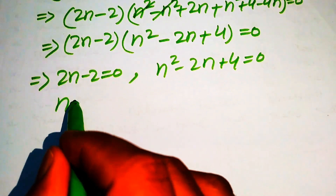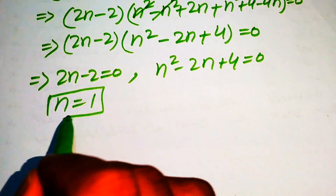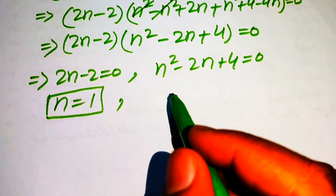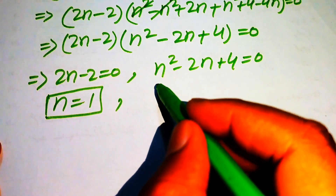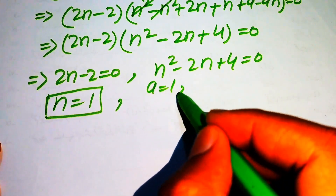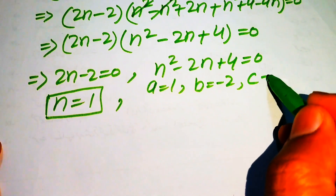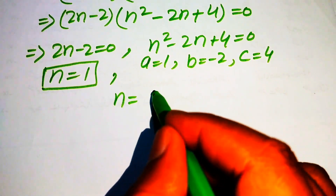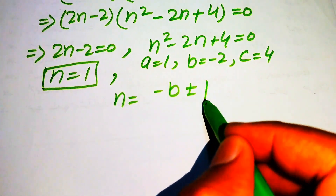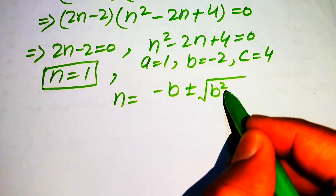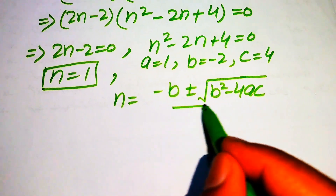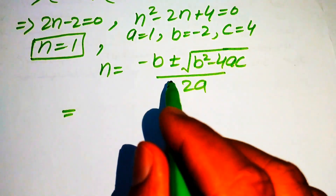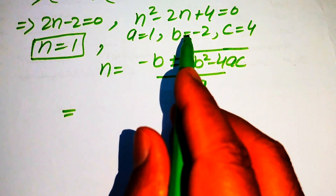We now have two sub-cases. From the first factor, 2n minus 2 equals 0, we easily get n equals 1. This is the third root of the given equation. To find the remaining roots we solve the quadratic n squared minus 2n plus 4 equals 0, with coefficients a equals 1, b equals minus 2, and c equals 4.